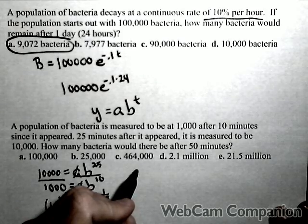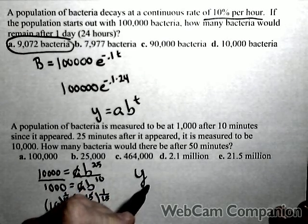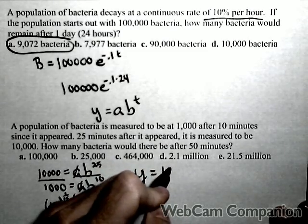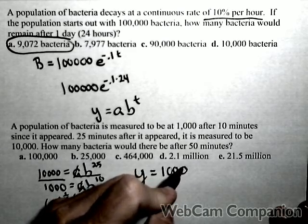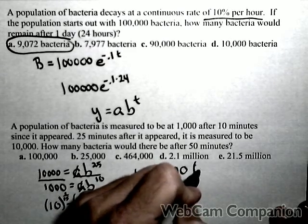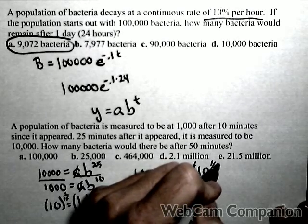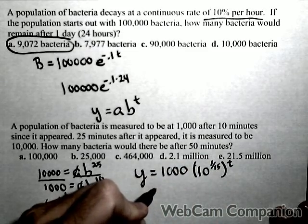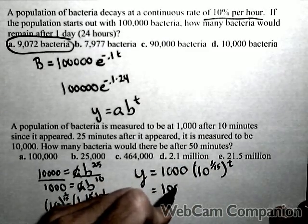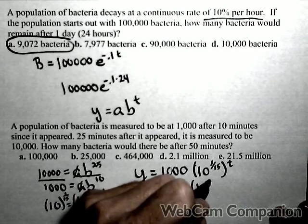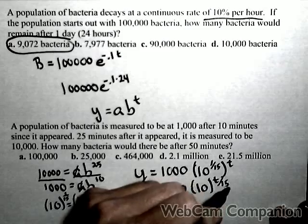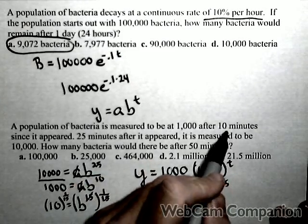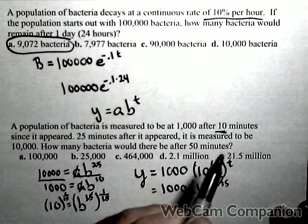So when I build my model I'm going to do something kind of interesting. Instead of trying to find out how many bacteria there are when zero minutes had passed, I'm going to use 1,000 as my initial. And I know my b is 10 to the 1/15th to the t, or I can actually simplify this a little bit and write this as y is 1,000 times 10 to the t over 15. Now here, because of how I built my model, t is the number of minutes after 10 minutes. It's one thing we have to be careful of.